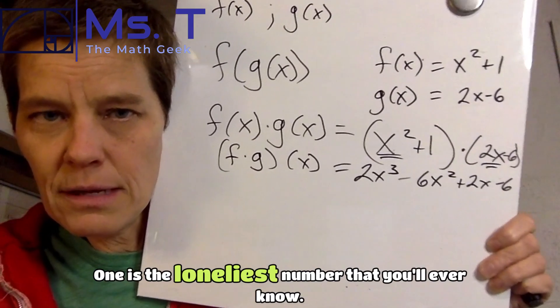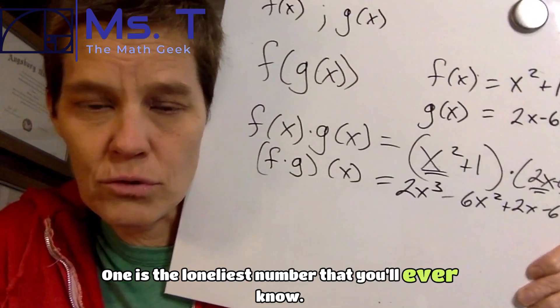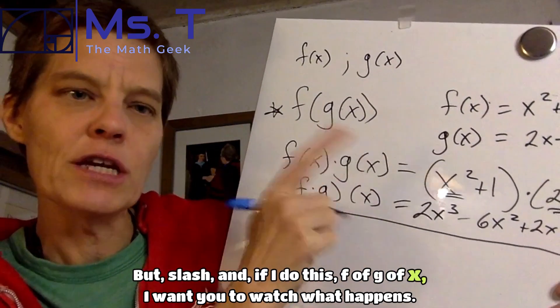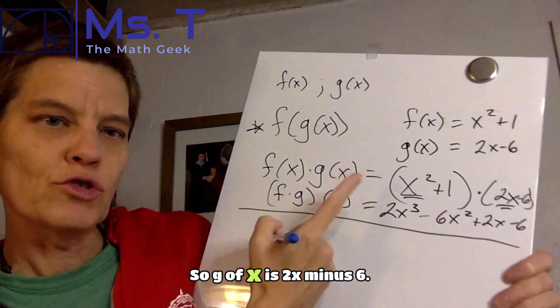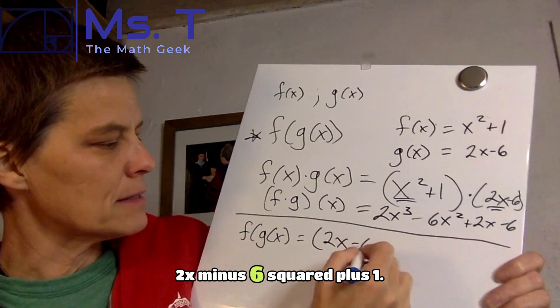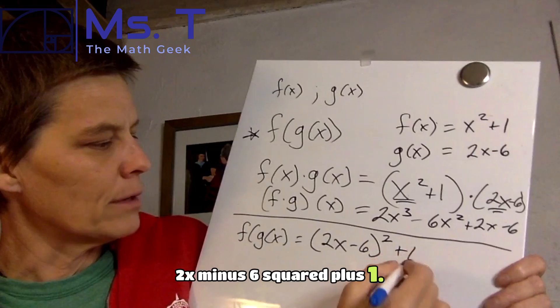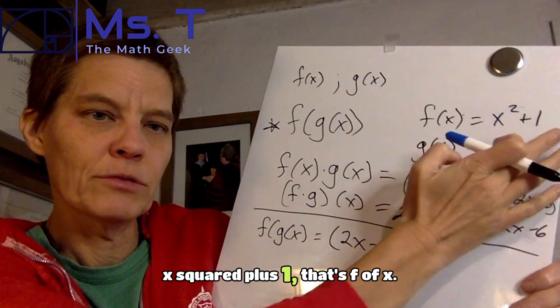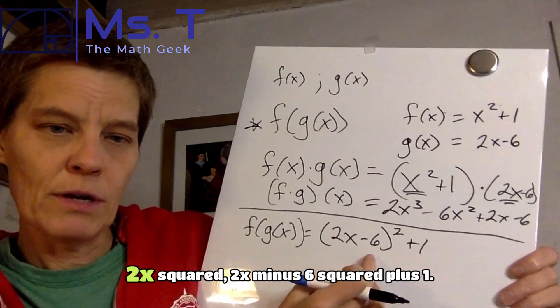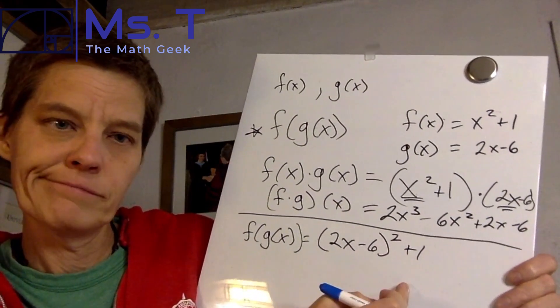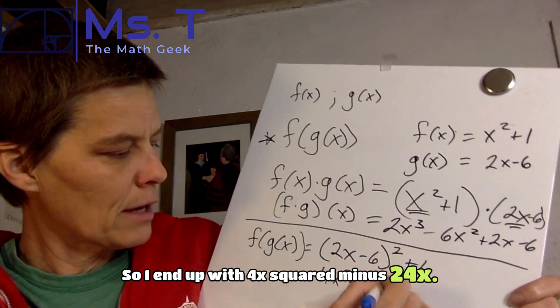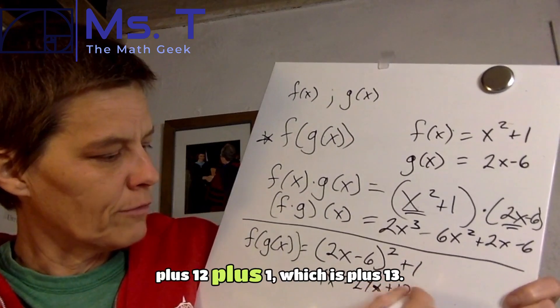One is the loneliest number that you'll ever knew. Okay, now, but slash and. If I do this, f of g of x, I want you to watch what happens. So g of x is 2x minus 6. I get f of g of x is equal to 2x minus 6 squared plus 1. Do you see it? x squared plus 1. x squared plus 1. That's f of x. Oh, I need an extra parenthesis. This is g of x. 2x minus 6 squared plus 1. So I end up with 4x squared minus 24x plus 12 plus 1, which is plus 13.